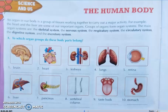An organ in our body is a group of tissues working together to carry out a major activity. For example, the heart and the liver are some of our important organs. Groups of organs form organ systems. The main organ systems are the skeletal system, the nervous system, the respiratory system, the circulatory system, the digestive system, and the excretory system.